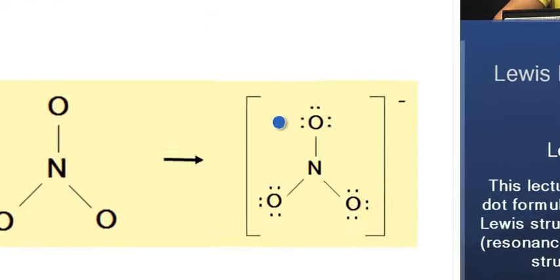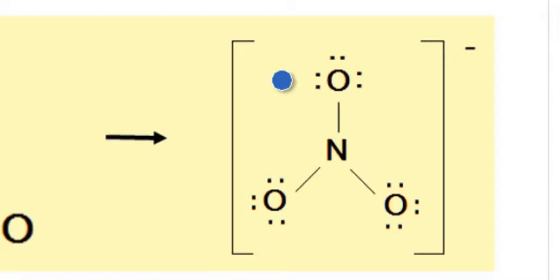Now, if you take a look over here, for nitrogen to have an octet, right? For nitrogen here to have an octet, since it only has six valence electrons at this point, right? One of these oxygen atoms, right, they must use a lone pair to form a nitrogen-oxygen triple bond.